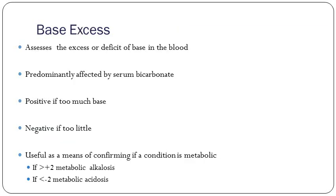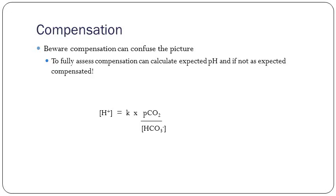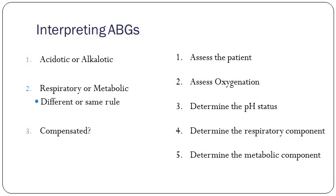Base excess is basically equal to serum bicarb. If you don't need to know about it, we'll skip over it. Regarding compensation — there are some cases that are compensated where you're not sure if it's an acidosis or alkalosis because the pH is normal and the pattern could be either a respiratory acidosis or metabolic alkalosis. The way you figure it out is using a complex equation — that said, expecting that in finals would be a bit harsh.